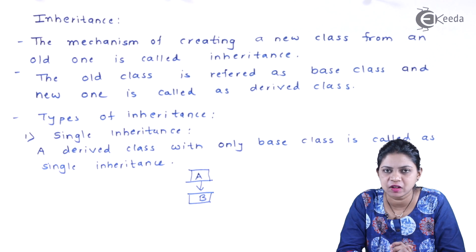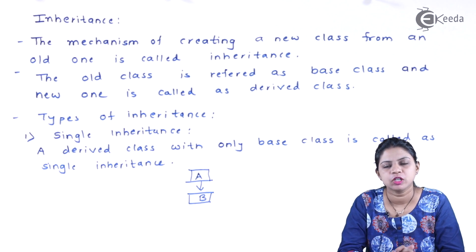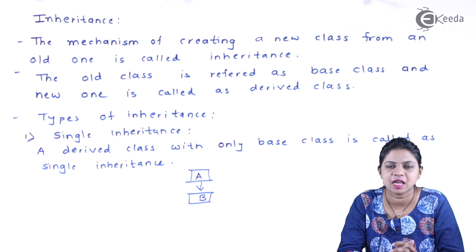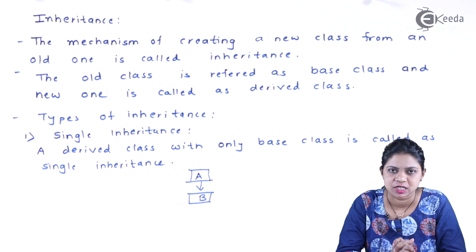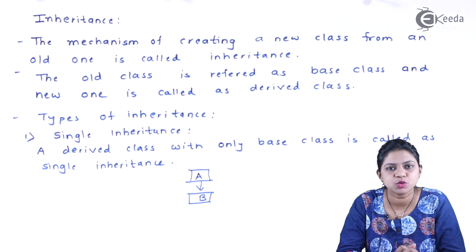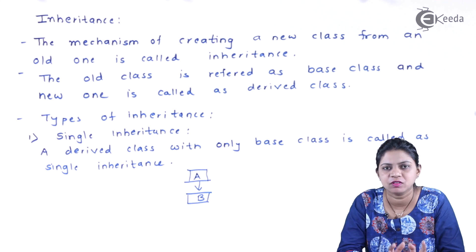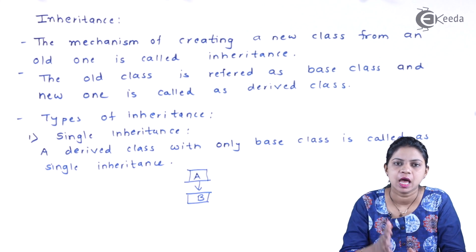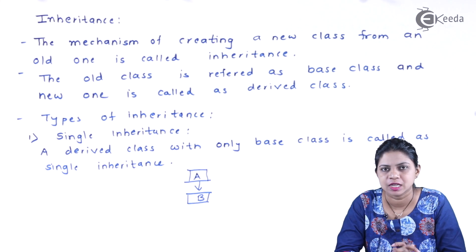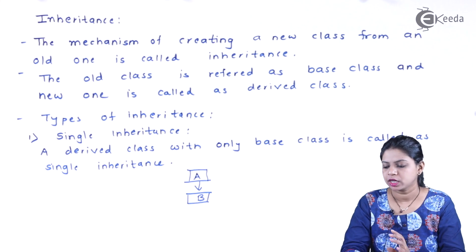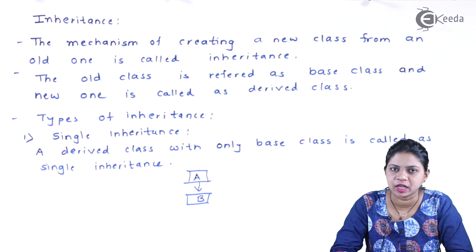When I create a new class, I call it a derived class, whereas my old class is called the base class — or you can call it the parent class — and my new class is called the child class. Inheritance allows us to implement the concept of reusability: my new class will inherit all the features of my old class. Now let us see the definition of each type of inheritance.